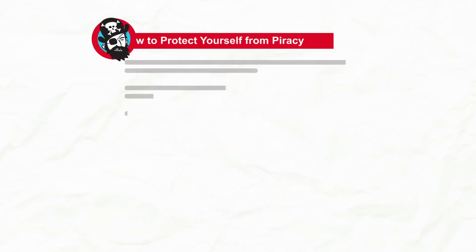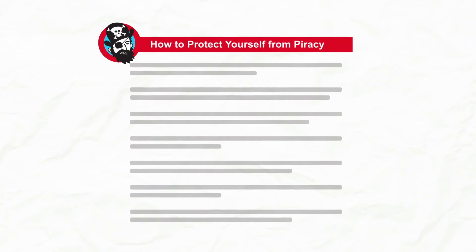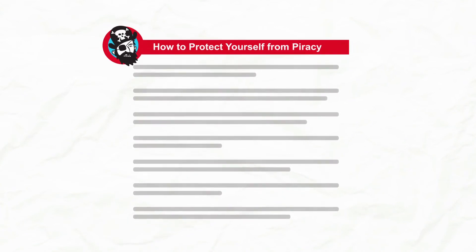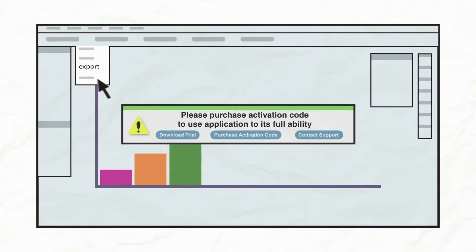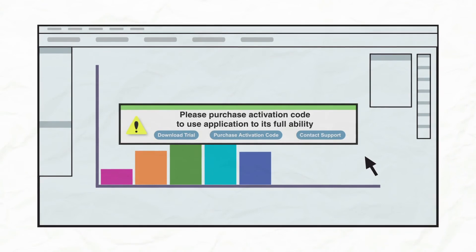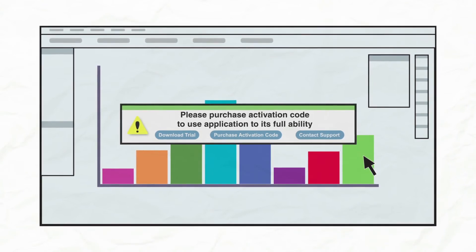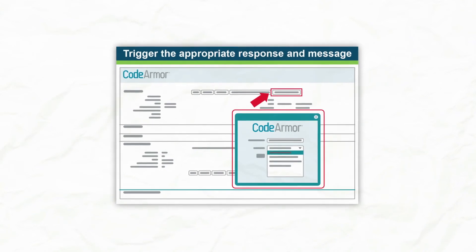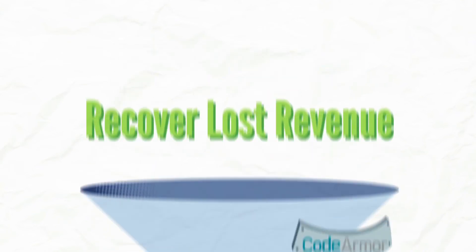You can also add links to educational pages on your website about unlicensed use and how they can protect themselves. If the user continues without purchasing, you can even limit the functionality of the application. CodeArmor gives you complete control over who receives which in-application messages and when.